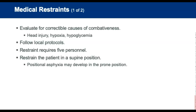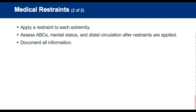First evaluate the patient for correctable causes of combativeness such as head injury, hypoxia, or hypoglycemia, and follow your local protocols or obtain medical authorization if necessary. Restraints require a minimum of five people — one for each extremity and one for the head. One EMT should be the established team leader. The patient should be in the supine position, as a prone position can lead to asphyxia. Each extremity should have a restraint applied, with one arm above the head and the other at the side. Assess ABCs, mental status, and circulation after, during, and often, and document all information.